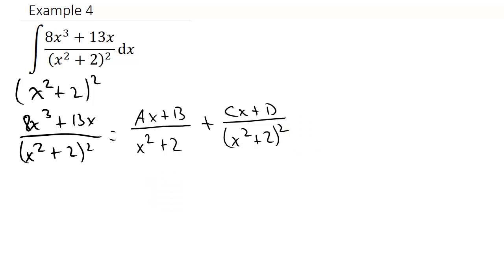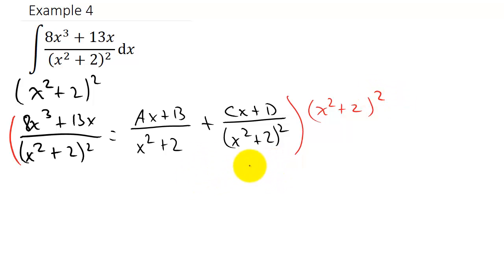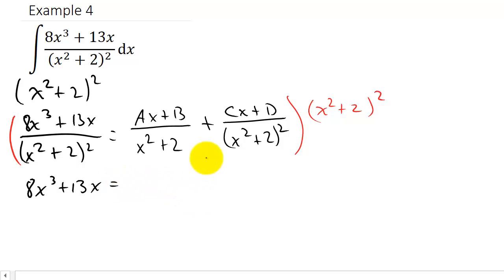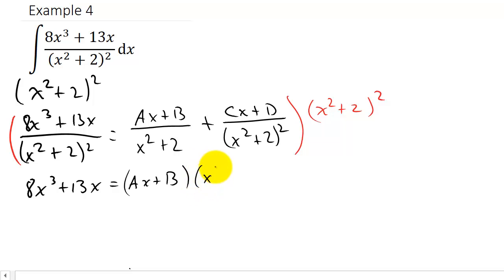Now we have to multiply everything by the common denominator, which is x squared plus 2 squared. When I multiply this term by the common denominator the denominator cancels, leaving 8x cubed plus 13x. One of the x squared plus 2 factors cancels on the first term, giving ax plus b times x squared plus 2. When multiplying the common denominator by the second term, x squared plus 2 squared cancels out, leaving just cx plus d.